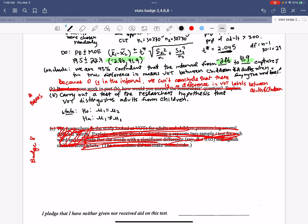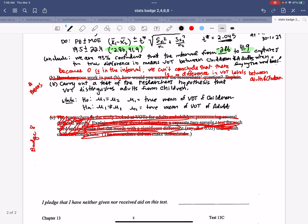So the first one we're going to make to mean the true mean of VOT of children. And the second one we would make to mean the true mean of the VOTs of adults. And we're going to test his claim to see if they are any different.